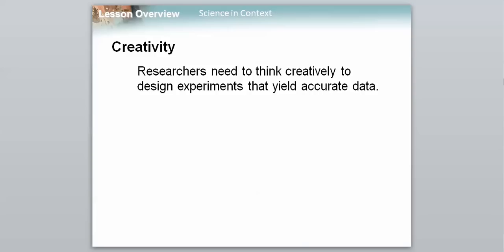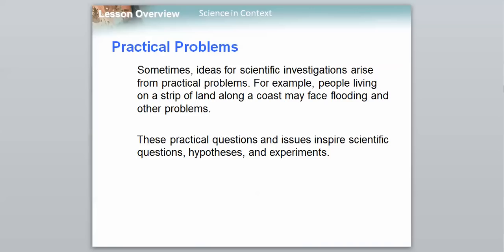And also, remember the next step, talking about practical problems. So another reason we might want to carry out the scientific method is to solve a practical problem. Sometimes ideas for scientific investigation will arise from a practical problem. For example, people living on a strip of land along the coast may face flooding and other problems. So these questions can inspire scientific questions, hypotheses, and experiments. If we didn't use science to solve practical problems, we would not be a very smart race, and we probably wouldn't have made it to the point that we're at now. So that is key, making sure you're actually using science to solve things that are relevant to our world.